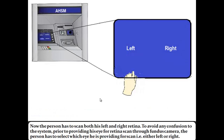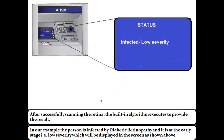Now the person has to scan both his left and right retina. To avoid any confusion to the system, prior to providing his eye for retina scan through the fundus camera, the person has to select which eye he is providing for scan — either left or right. After successfully scanning the retina, the built-in algorithm in the AHSM executes to provide the result. In our example, the person is found to be infected by diabetic retinopathy and is at the early stage, that is low severity, which will be displayed on the screen as shown above.